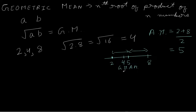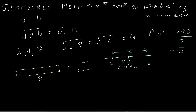Let's understand what the geometric mean represents geometrically. Think of it in terms of area. If we have a rectangle whose sides are the two given numbers — one side is 2 and the other is 8 — then the geometric mean is the side length of a square with the same area. The rectangle's area is 16, and for a square to have area 16, its side must be 4. So the geometric mean is that side length: the side of a square whose area equals the area of the rectangle formed by the two numbers.